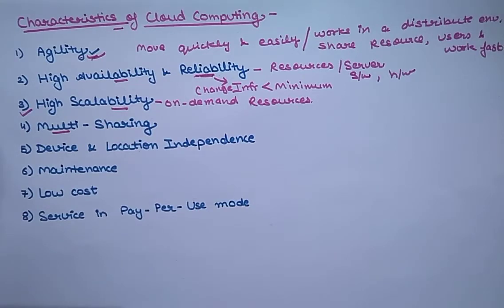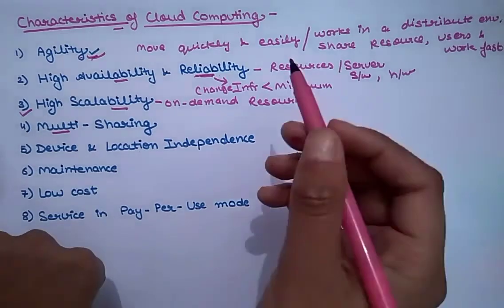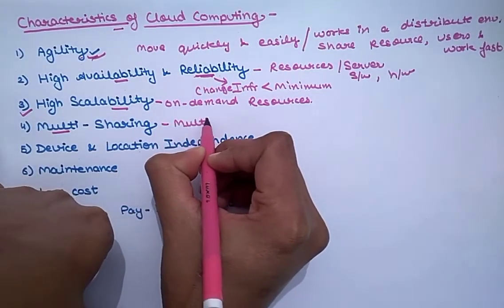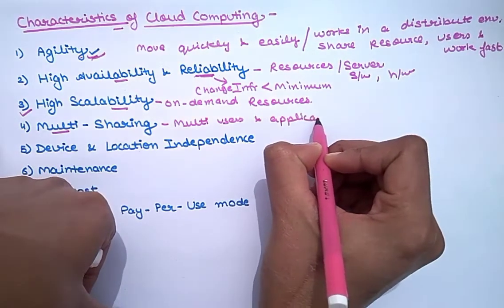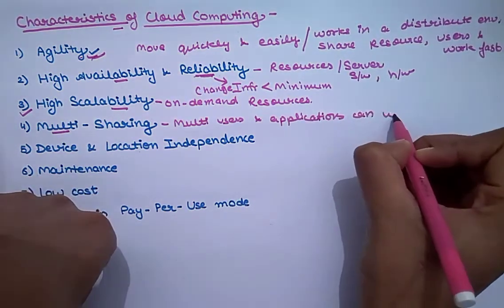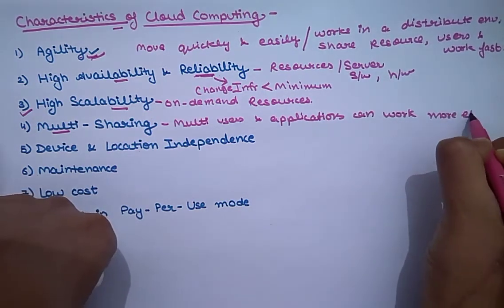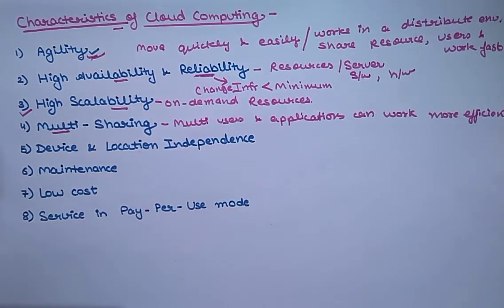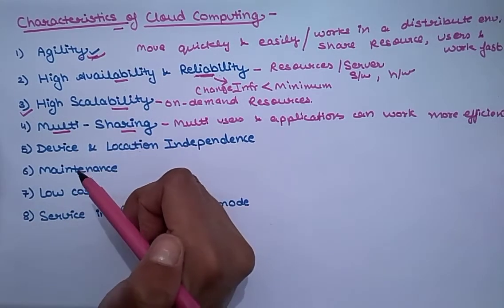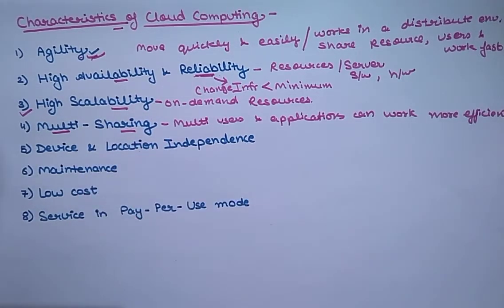The next point is multi-sharing. Multi-sharing means we can share one thing with multiple people. With the help of cloud computing, multiple users and applications can work more efficiently. We can get any number of software, hardware, or infrastructure. This is called multi-sharing, and it comes with cost reductions by sharing common infrastructure.